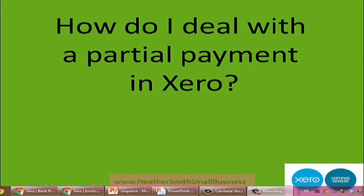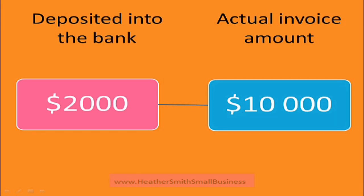How do I deal with a partial payment in Xero? What has happened is $2,000 has been deposited into the bank account, but the actual invoice amount is for $10,000. So what I need to do is apply that $2,000 to the $10,000 invoice and reduce that invoice down to an outstanding amount of $8,000.